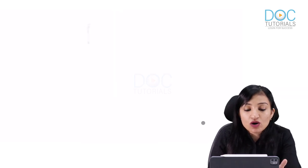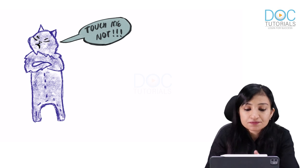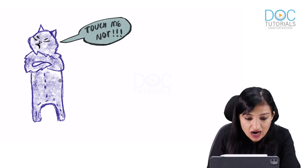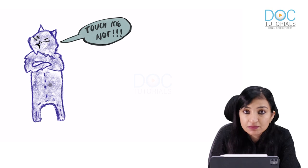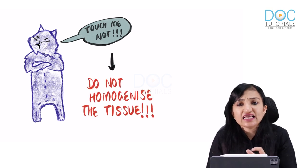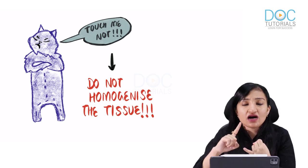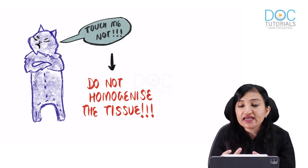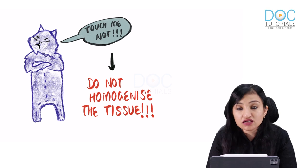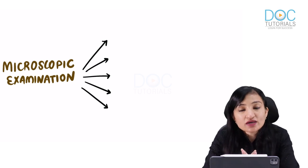A very important point: if you suspect Mucormycosis, do not unnecessarily grind or homogenize the tissue specimen. These fungi are very delicate — broad, ribbon-like — and the hyphae will break if handled harshly, preventing you from appreciating the correct morphology under the microscope.